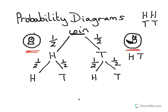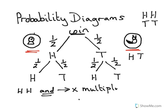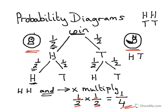Now we've tossed the coin twice. What's the probability of getting a head and another head? When you want two things using the word 'and', that tells you in statistics you have to multiply the two probabilities together. So you take the first probability — one half — and multiply by the second chance of getting a head, another half. One half times one half equals one quarter.